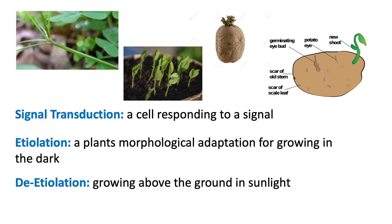When we talk about signal transduction in plants, one of the most common examples is etiolation. Signal transduction is a cell responding to a specific signal. Within signal transduction, we have three steps: the reception of the signal, the transduction of the signal, and a response. We're going to understand signal transduction through the example of etiolation.